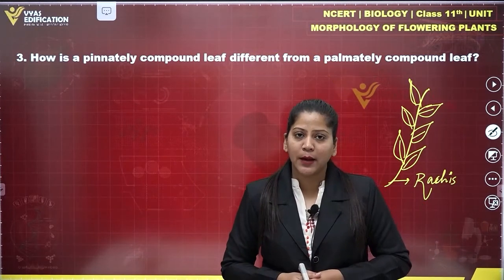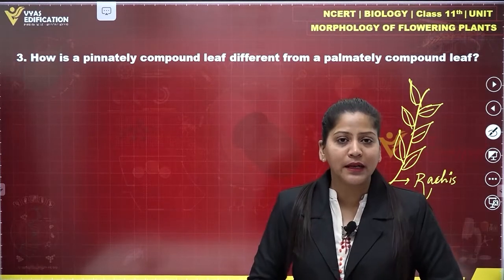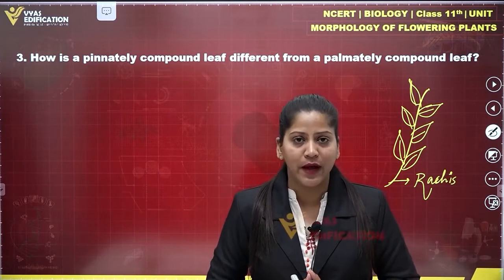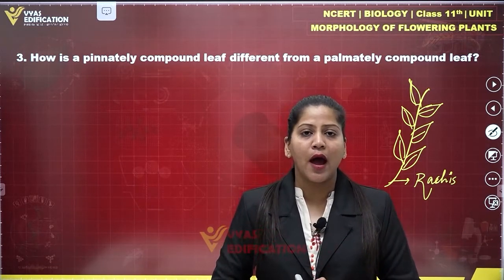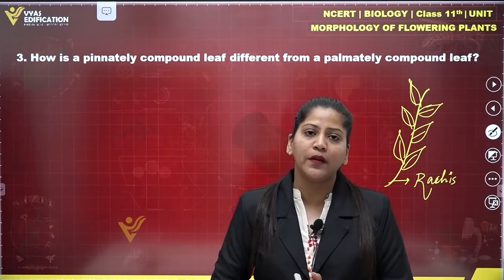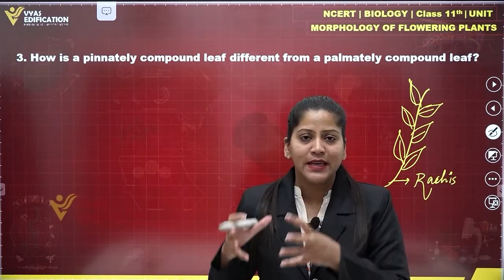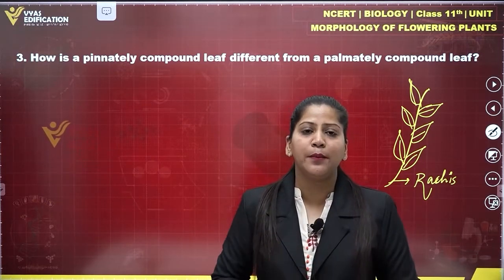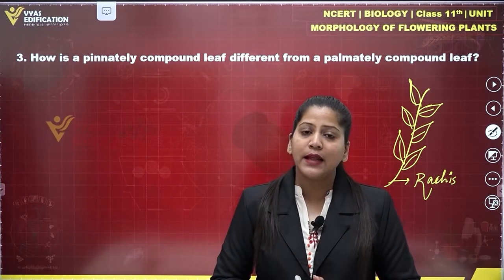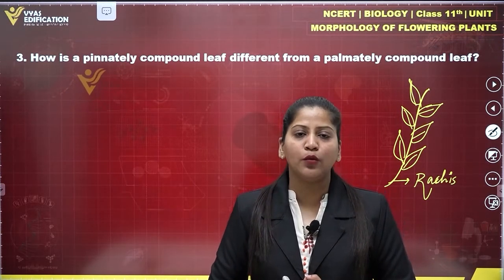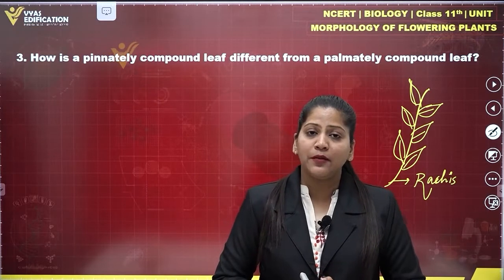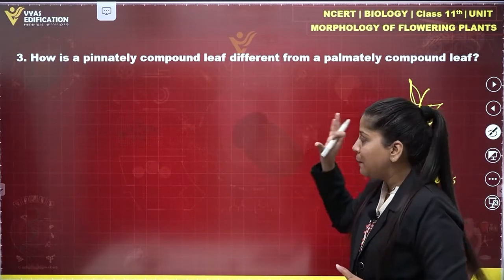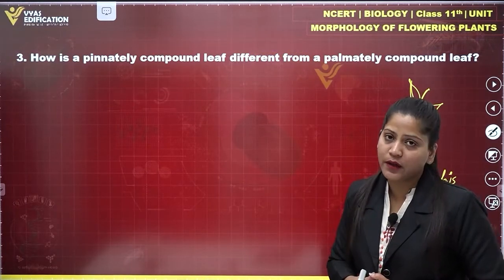Now let's talk about another type of leaf — the palmately compound leaf. In this type, all the leaflets are attached at a common point present on the stalk. When leaflets are attached at a common point on the stalk, these kinds of leaves are known as palmately compound leaves. For example, we have the cannabis plant.